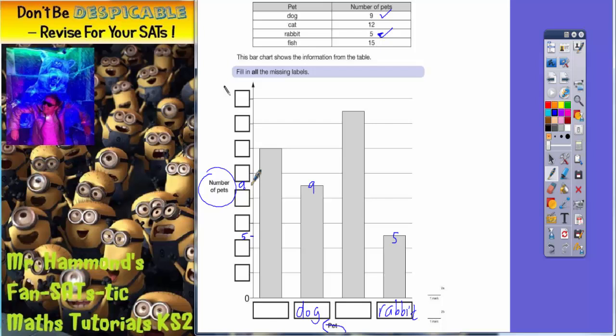So if you follow that bar along, that would be nine there. The next smallest bar is cat with twelve, which is this bar, the next smallest one.